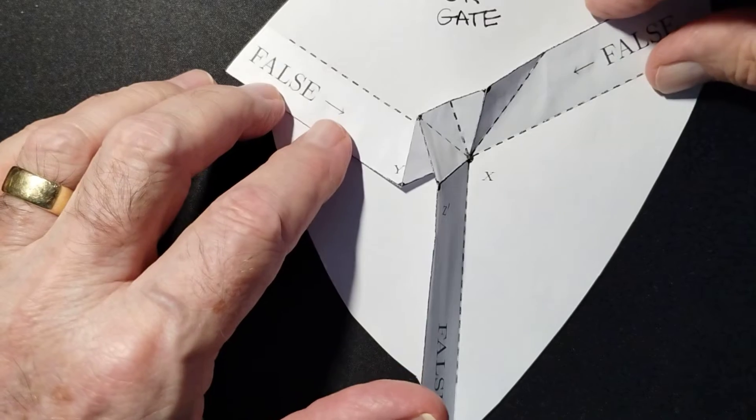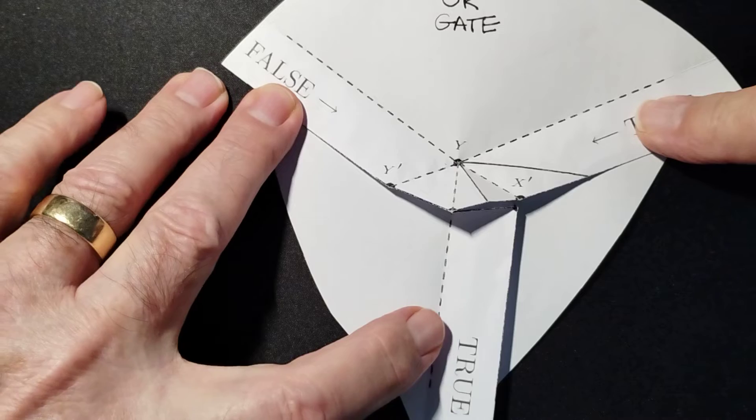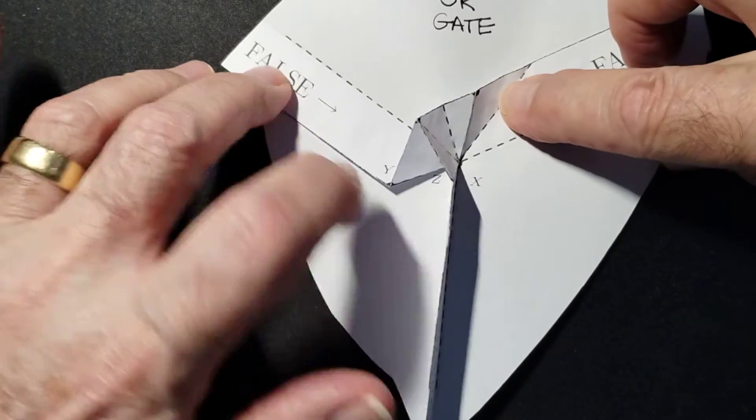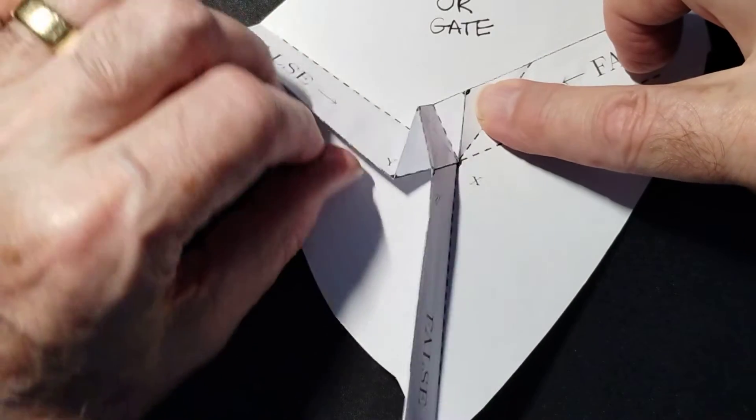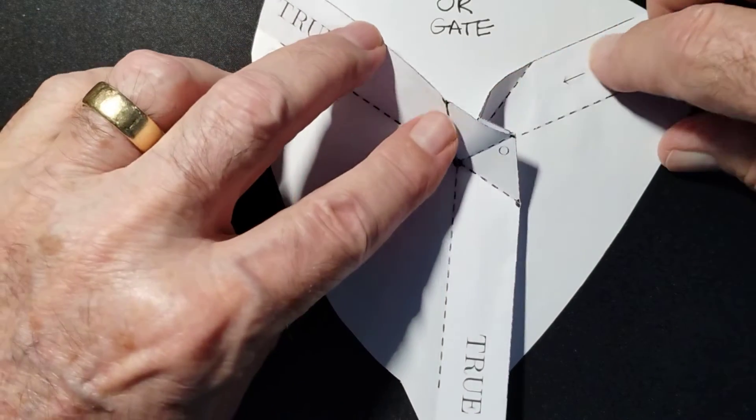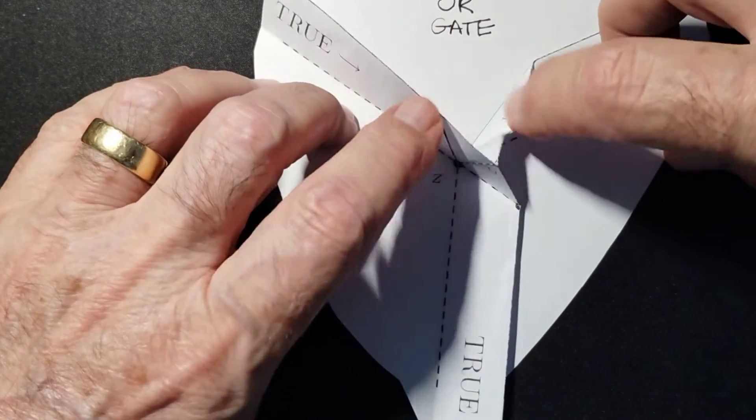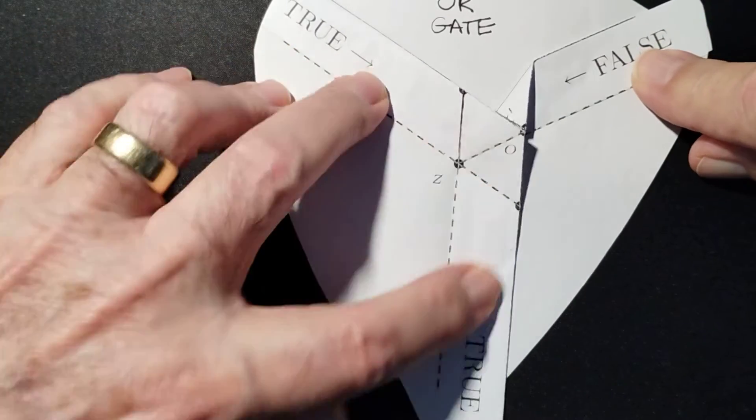If I introduce a true on either of the inputs, say there's a true input, it forces the output to be true. If I put that back to false and then force a true here, it has the same effect. It forces the output, oops that's a little wiggle in that widget, it forces the output to be true.